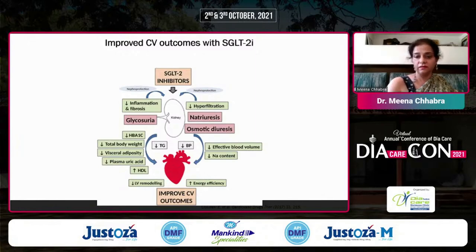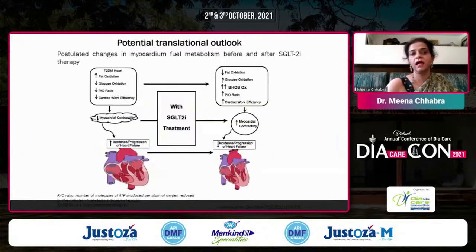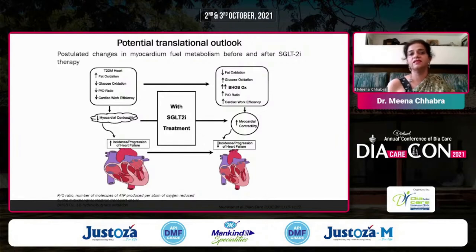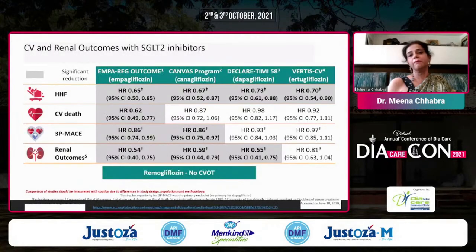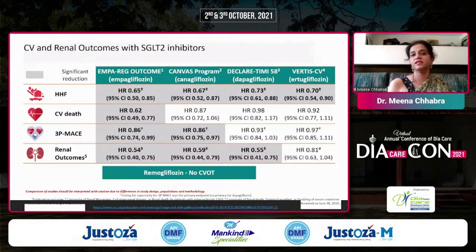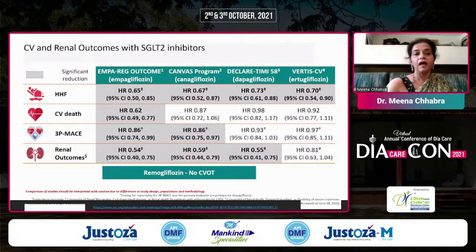In type 2 diabetes, the postulated mechanism is increased fat oxidation and decreased glucose oxidation — SGLT2 inhibitors address both. There are enough trials — DAPA, CANA, and EMPA — showing decreased heart failure hospitalization. EMPA-gliflozin reduces cardiovascular mortality. What harder endpoint than death? If death can be prevented by these drugs, why deprive the patient? Lifestyle modification should still go hand in hand with drugs.